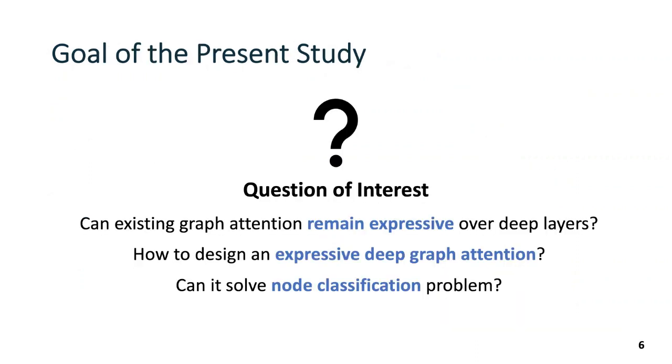Given the techniques to enhance GNN expressivity, we aim to answer the following three questions in this talk. First, can existing graph attention remain expressive over deep layers? Second, how to design an expressive deep graph attention? And last, can it solve node classification problem?